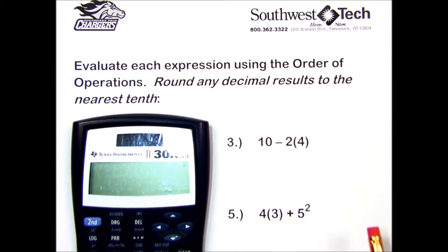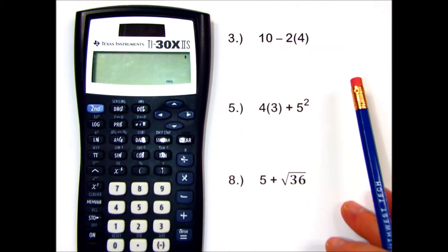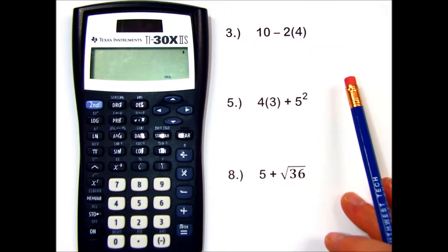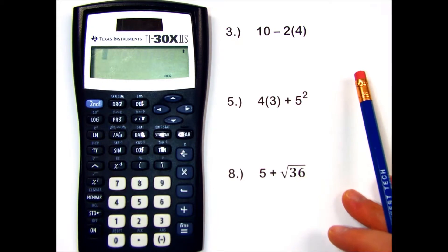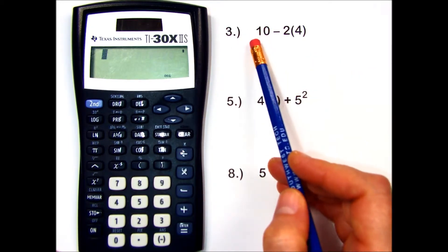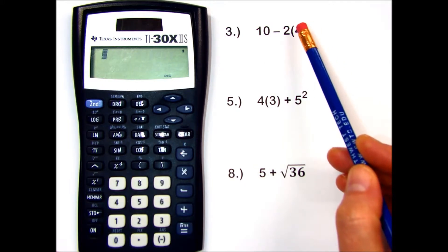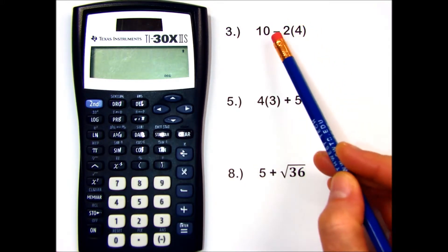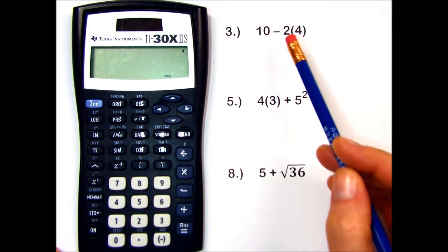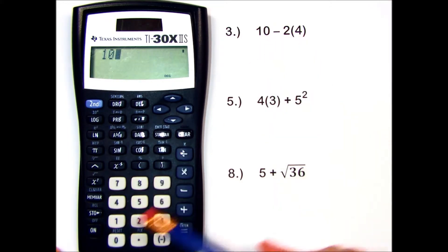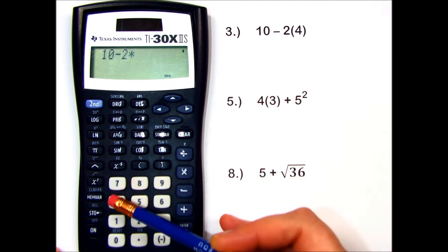Let's try a few problems together. For problem number 3, I'm going to key it in from left to right as it appears, knowing that the calculator will perform the multiplication first and the subtraction second for me. So I enter 10 minus 2 times 4.